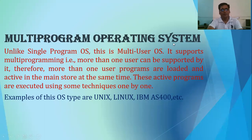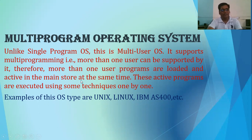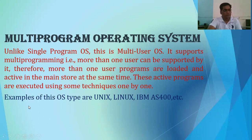Next is multi-program operating system. Unlike single program OS, this is a multi-user OS — meaning many users can perform their work at the same time. It supports multi-program, so more than one user's programs are loaded and active in the main store at the same time. These active programs are executed using some techniques one by one. Examples of this OS type are Unix, Linux, and IBM AS400.